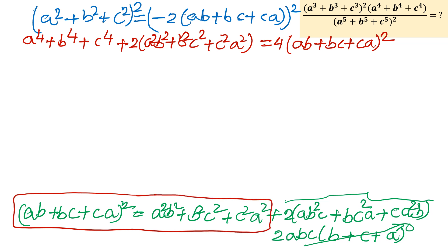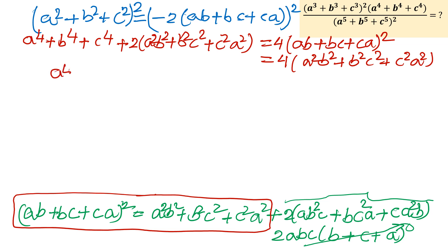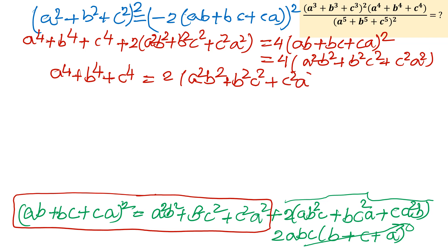Up to this point, because the next part is zero. So I will use this directly. In this place I can write 4 times, in bracket, A squared B squared plus B squared C squared plus C squared A squared. The conclusion is: A to the power 4 plus B to the power 4 plus C to the power 4 equals 2 times the quantity A squared B squared plus B squared C squared plus C squared A squared.